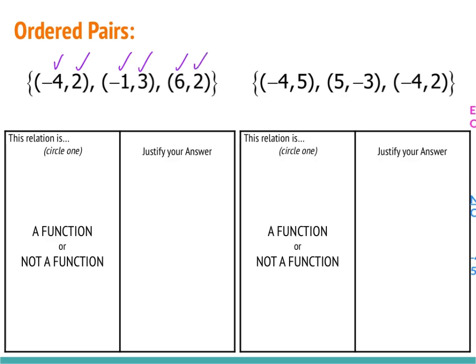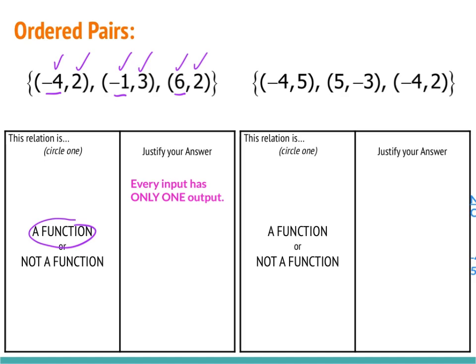Notice there are two 2s in the y portion of these ordered pairs, but we don't care about the outputs. We only care that each input has one output. Since negative 4, negative 1, and 6 each have only one output, that makes this a function. We justify our answer by saying that every input has only one output.